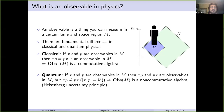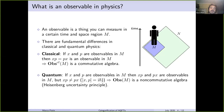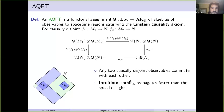Things get a bit nasty in the quantum setting. If you make a measurement, this will affect your system, and it's really important the order in which you make measurements — this has something to do with the Heisenberg uncertainty principle. Mathematically, if x and p are observables in m, then xp and px are still observables, but they don't commute in general. So observables in the quantum setting form a non-commutative algebra.